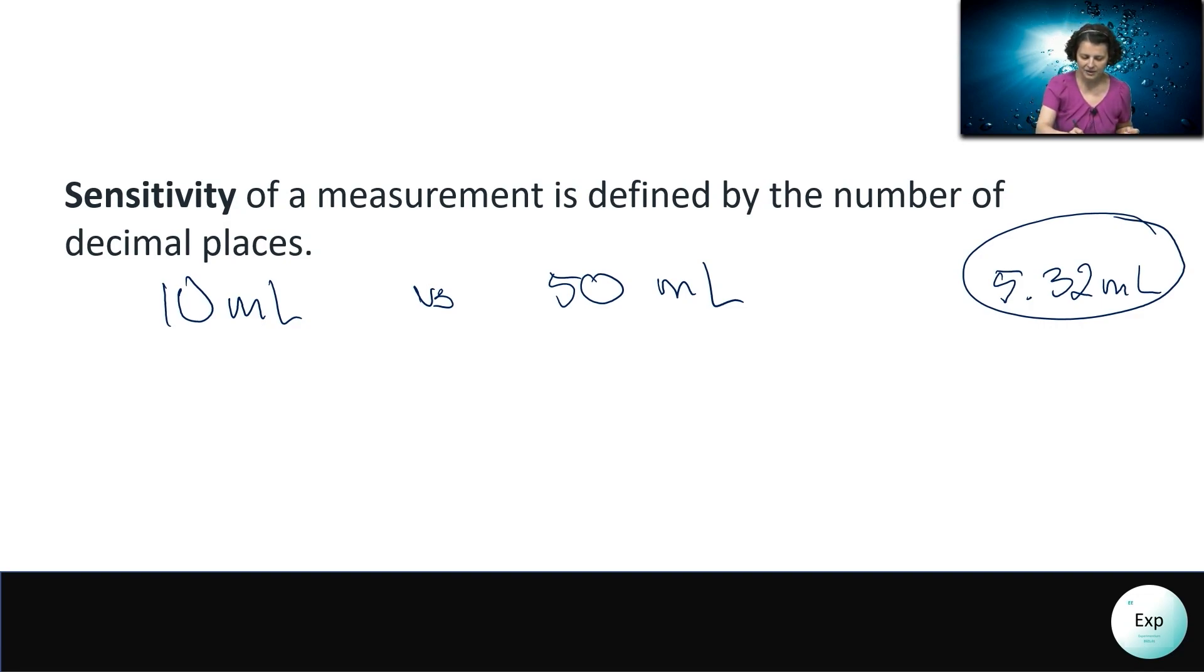Because there our estimate is going to be the digit in two decimal places with a value being the number before the decimal place and the first number after the decimal place. So that is the value. And after that, we're going to have our estimate or our uncertainty. That is going to be our second digit after the decimal place.